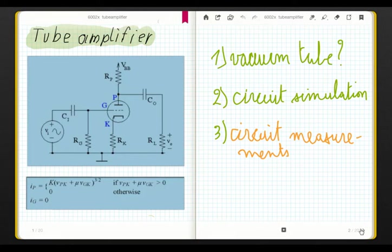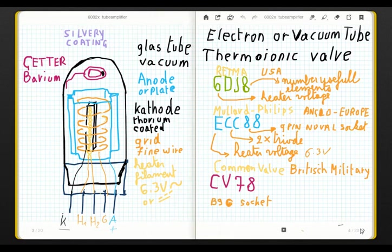So, how does a vacuum tube, also called electron tube or thermionic valve, work? Everything is built into a glass tube which is at the bottom sealed under vacuum so there is no air in it.